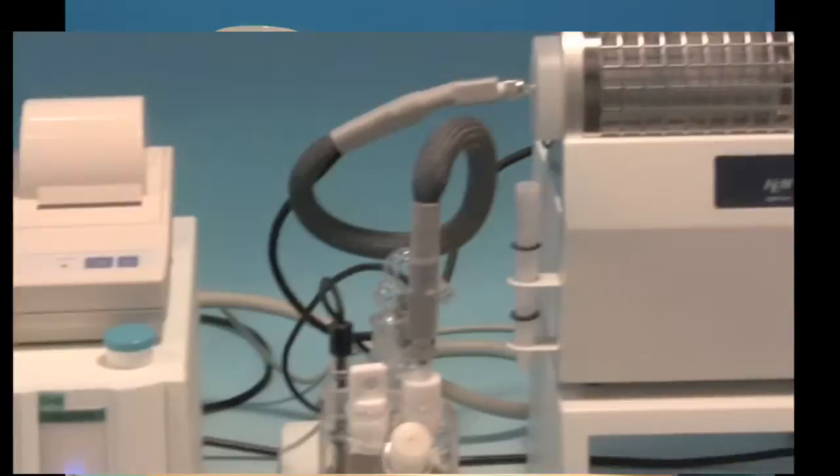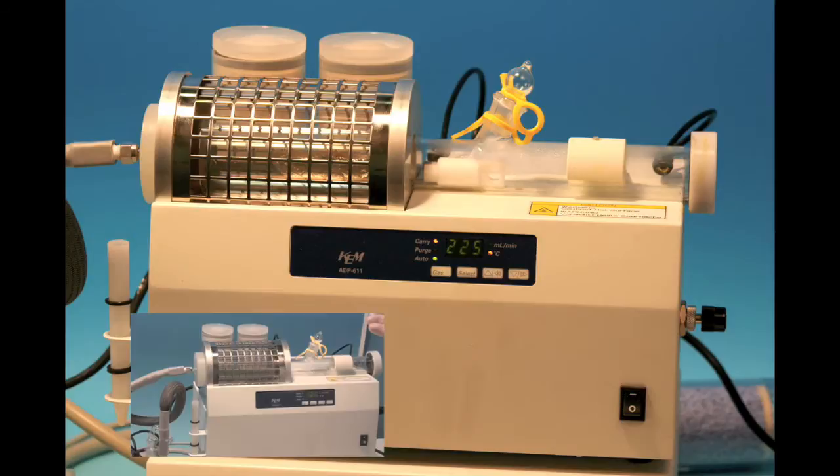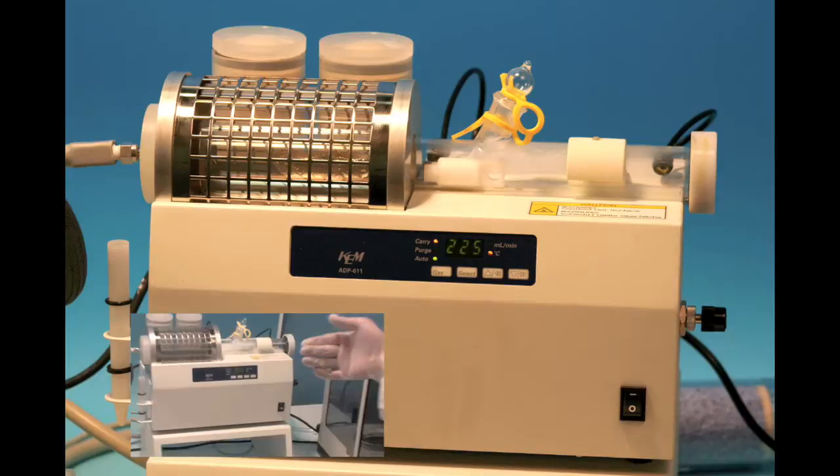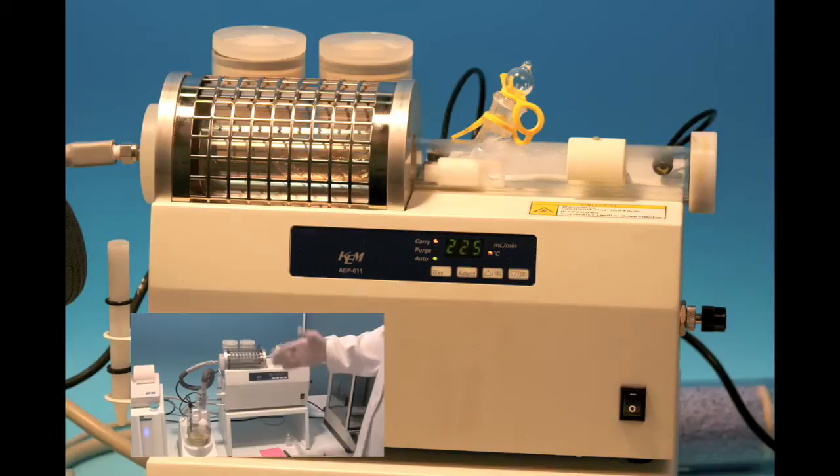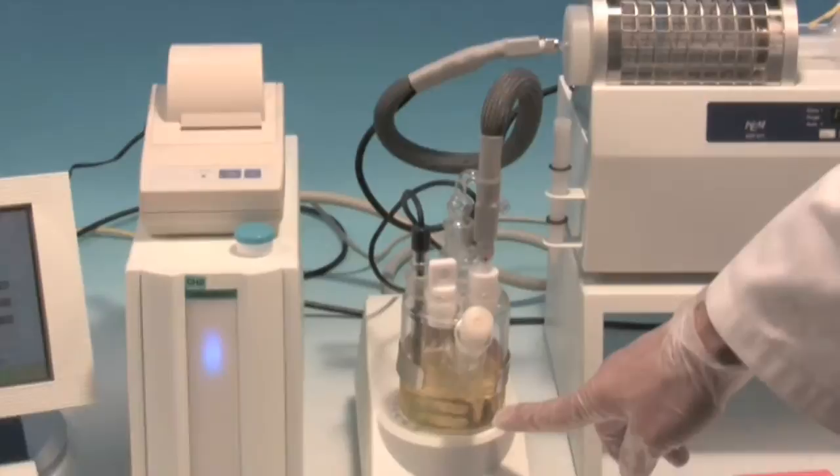And then here we have the ADP611. It's a solids evaporator. It goes from 0 to 300 degrees Celsius. We have a heater tube here where we put the sample in. The idea is that we use nitrogen gas to run the evaporator. Nitrogen gas comes into the back, and we have it set to temperature for the particular sample. It heats up the sample. The moisture comes off of the sample. It flows through the heater tube and then it bubbles into the vessel.